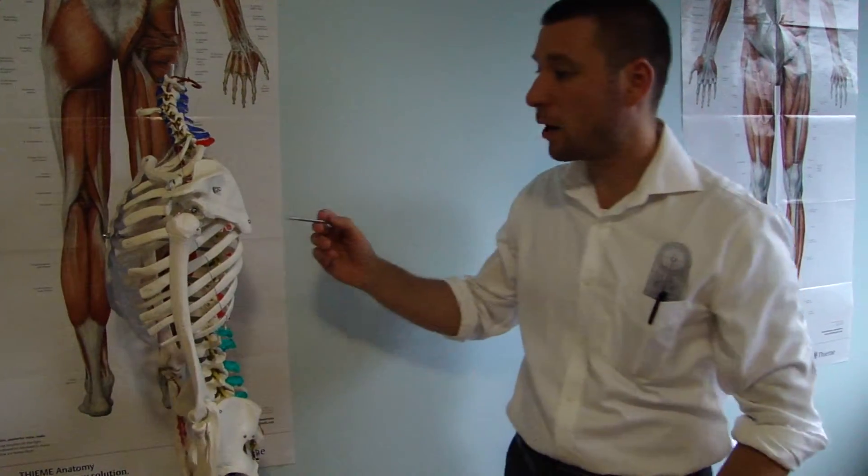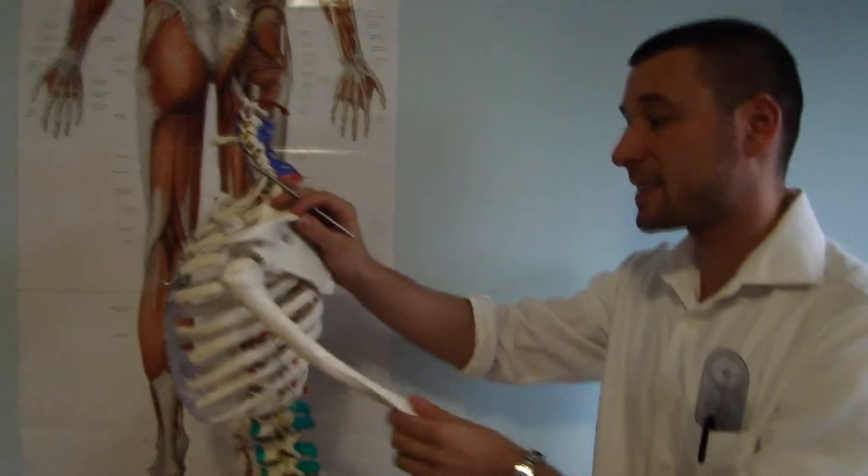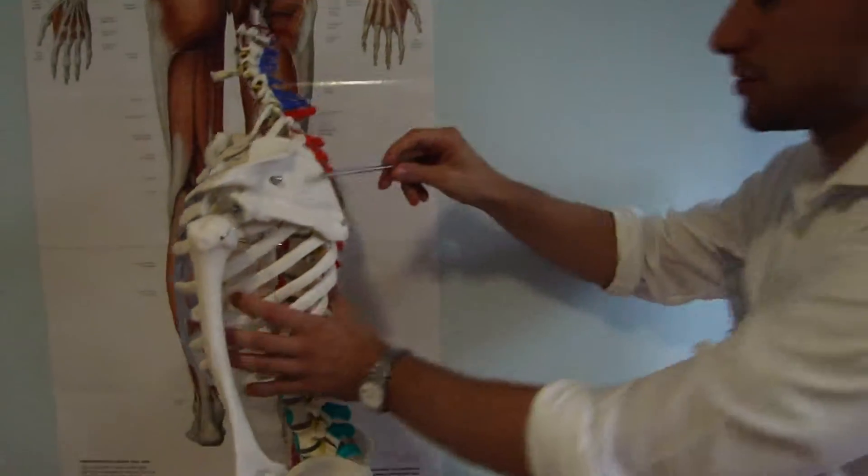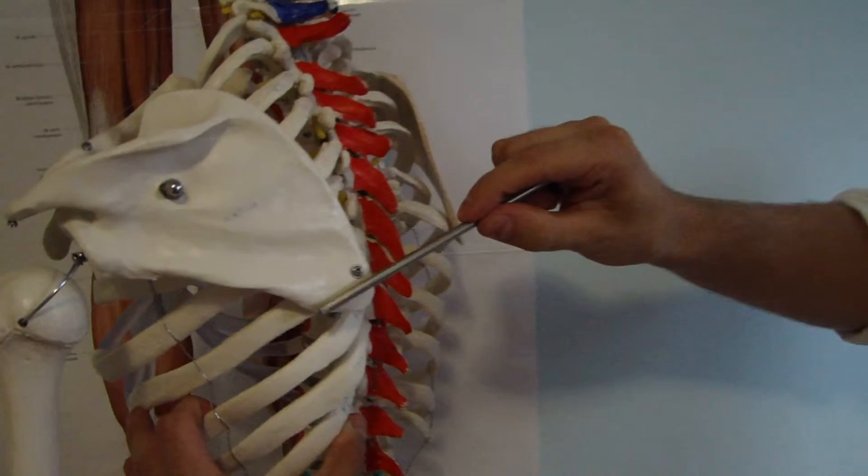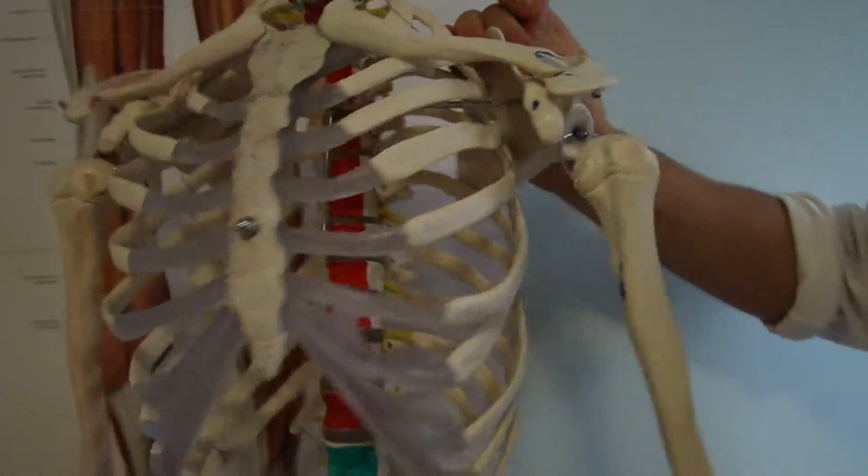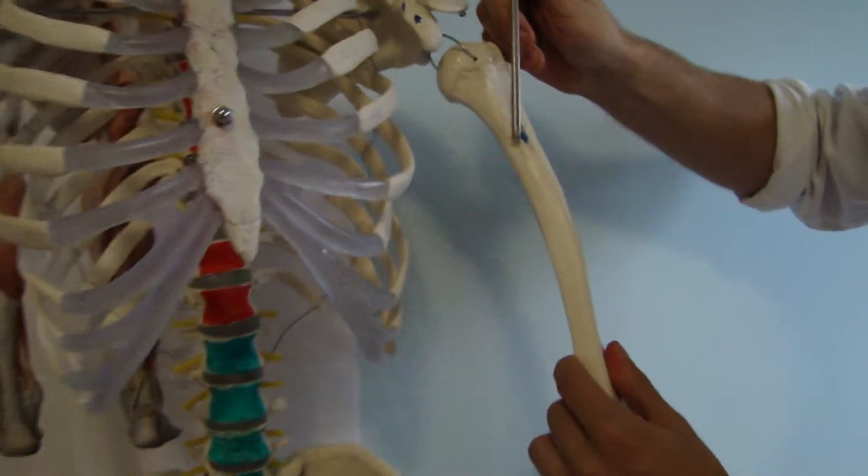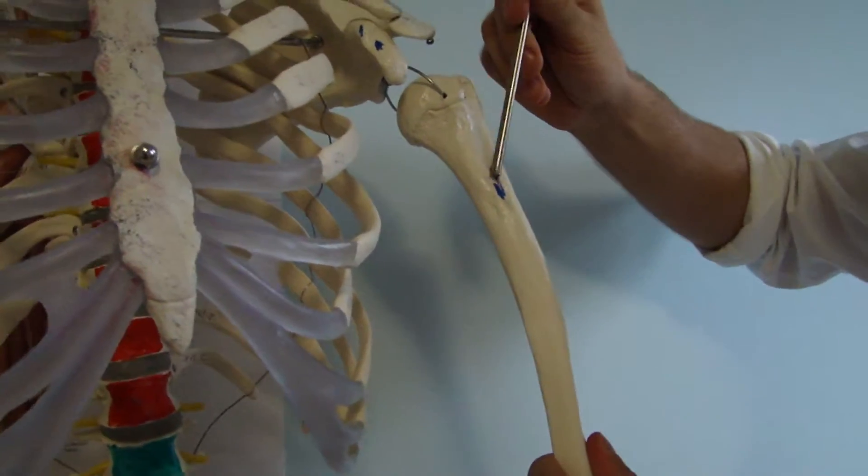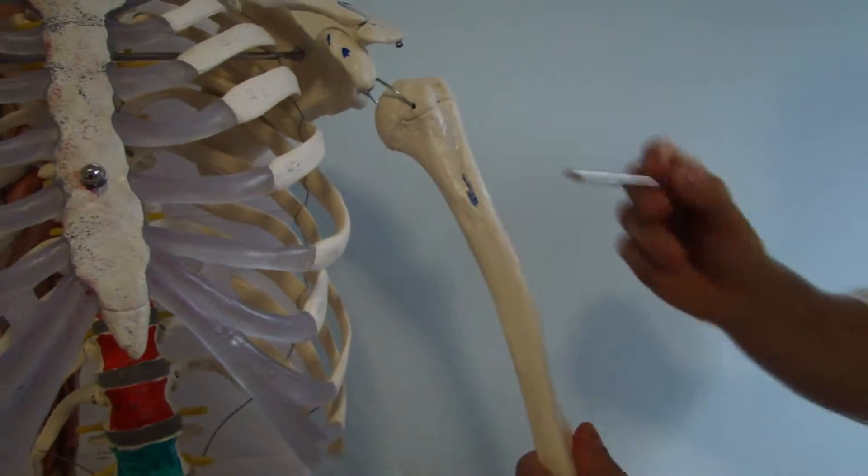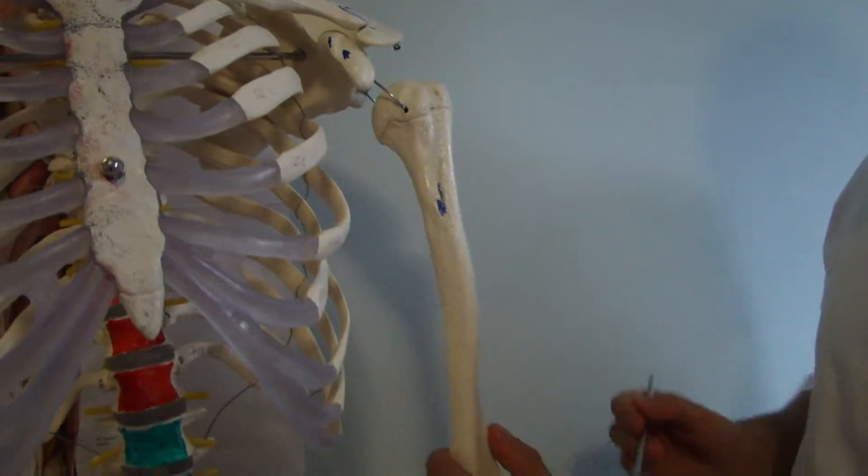Now if we focus on the last muscle which does extension, teres major, from posterior surface of scapula and inferior angle, it inserts over here just proximal to latissimus dorsi on medial side of intertubercular groove. It's called crista tuberculi minoris.